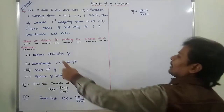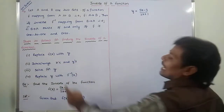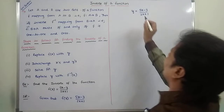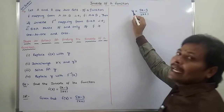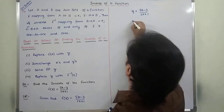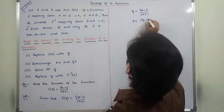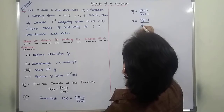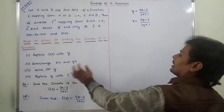So after replacing f of x with y, interchange x and y. Here we have to replace x with y and y with x. So then we are getting x is equal to 5y minus 3 divided by 2y plus 1. So the second step is completed.